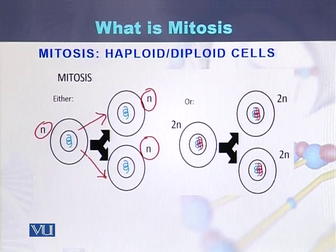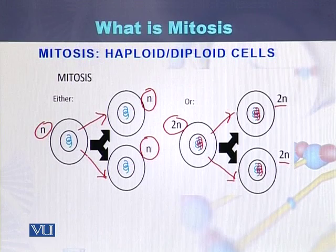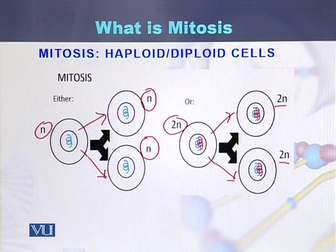Mitosis can also be seen in diploid cells. This is the example of a diploid cell. A diploid cell is converted into two daughter cells as a result of mitosis; both the daughter cells produced are also diploid. So mitosis is a process that can happen in haploid cells and can also happen in diploid cells.